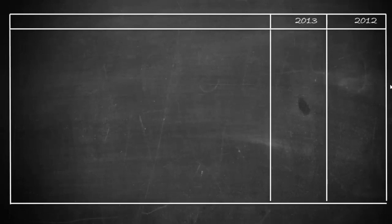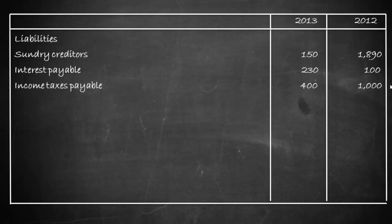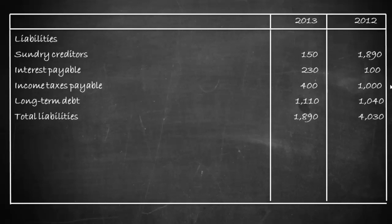Moving to liabilities: sundry creditors increased from 890 in 2012 to 1500 in 2013, indicating a sizable increase. Interest payable moved from 100 in 2012 to 230 in 2013, meaning a portion of interest has not been paid. Income tax payable came down from 1000 to 400. Long-term debt moved from 1040 to 1110.